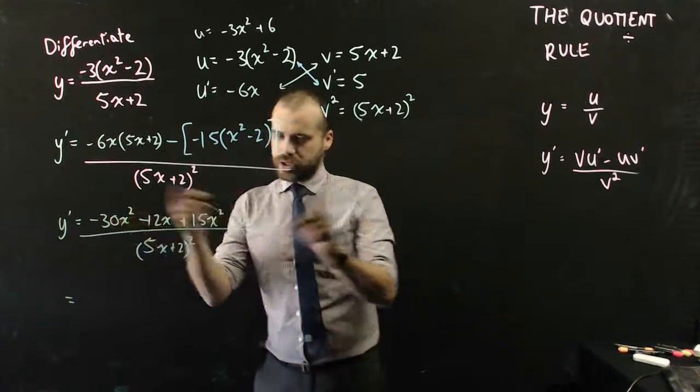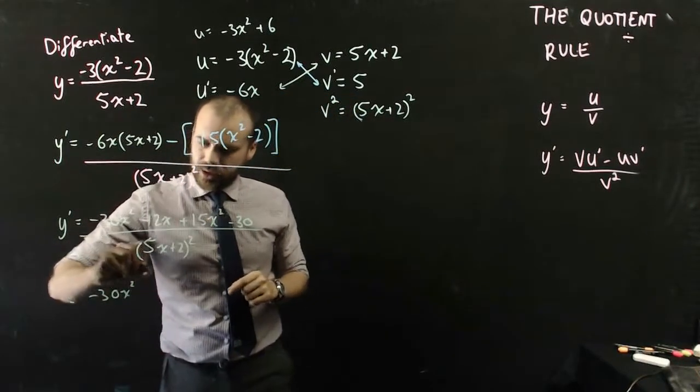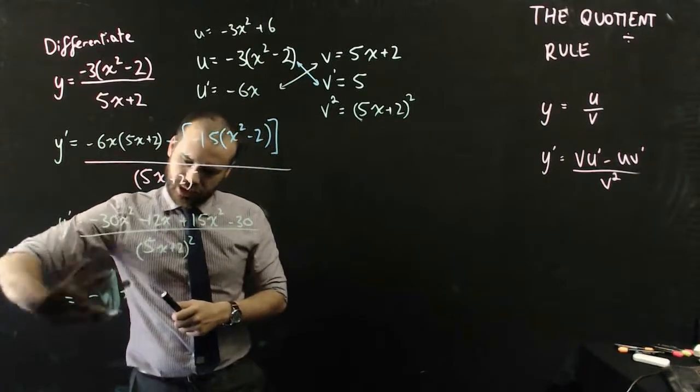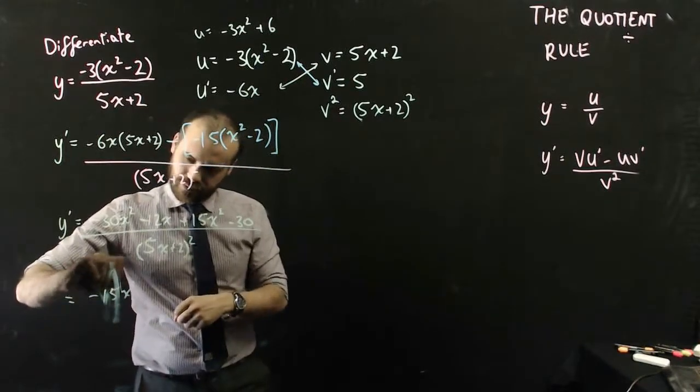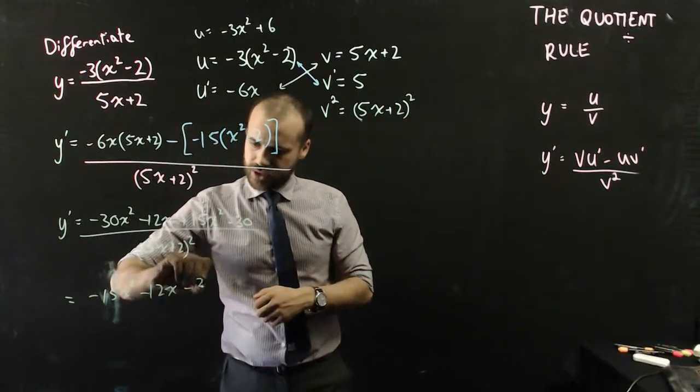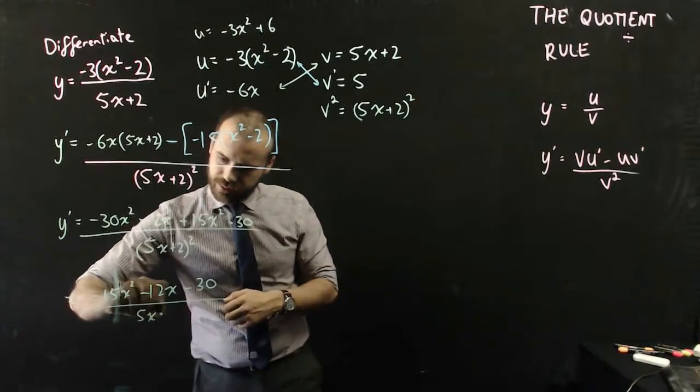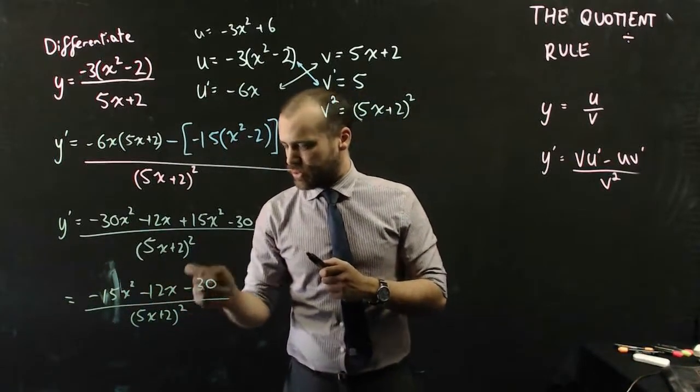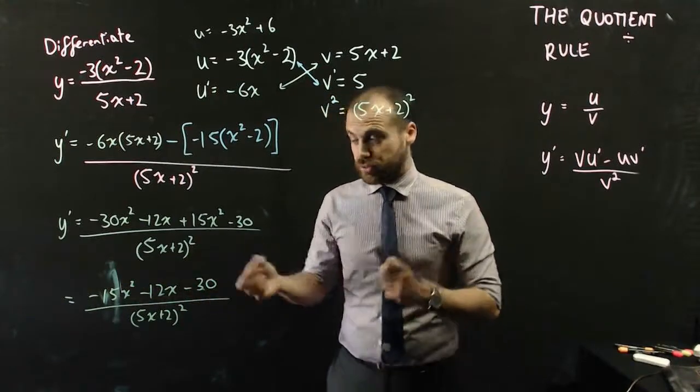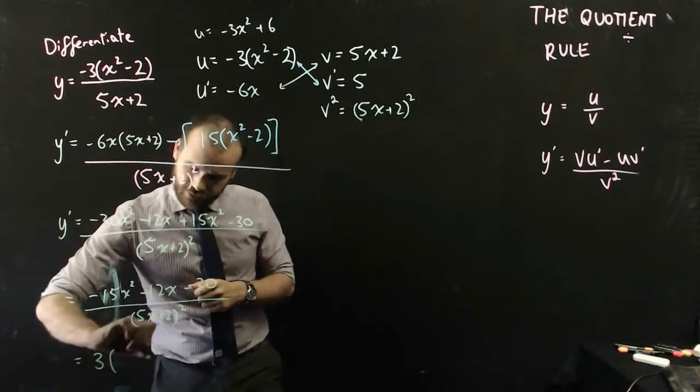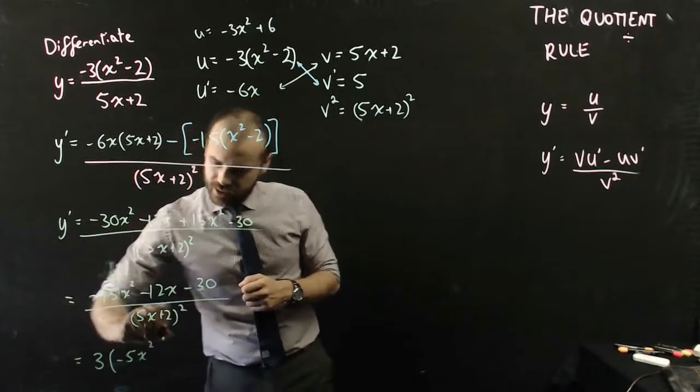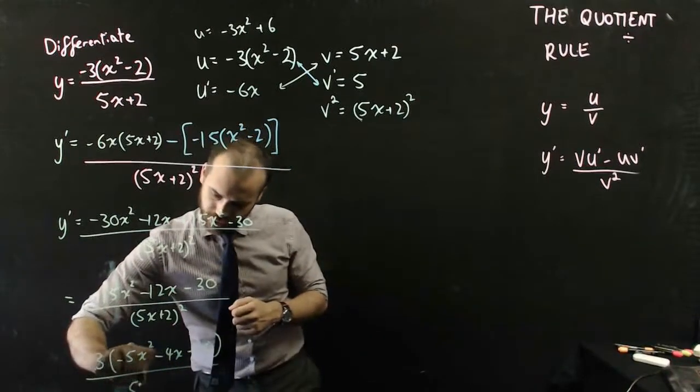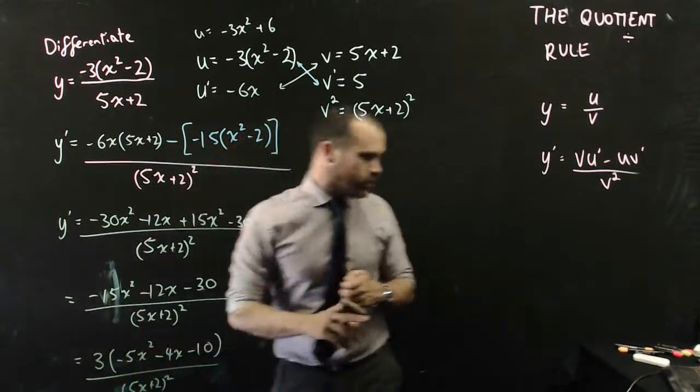All right, now I can group some like terms up the top. I've got negative 30x squared. I've got negative 12x. Oh, I've got 15x squared as well. So, that negative 30 is actually going to be more like negative 15. Negative 12x and negative 30 all over (5x plus 2) squared. And then you should look up the top here and see a 15, a 12, and a 30. And notice that they all have a common factor of 3. And we can factorize that. So, I'll bring that 3 out the front and make that negative 5x squared, negative 4x, and negative 10 all over (5x plus 2) squared. Hopefully, I haven't fallen off the edge. I have.